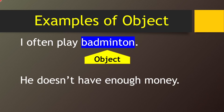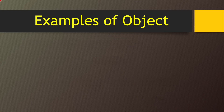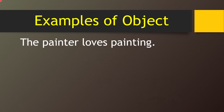He doesn't have enough money. Here, have is the main verb and money is receiving the action, so money is the object in this sentence. The painter loves painting. Here, loves is the main verb — loves what? Loves painting. So in this sentence painting is receiving the action, so painting is the object.